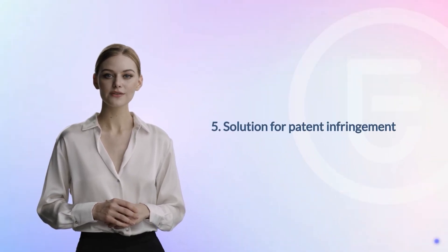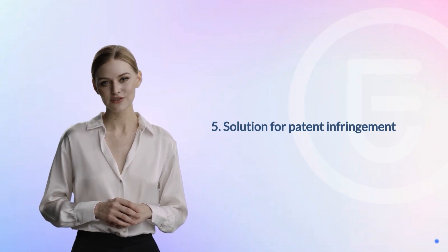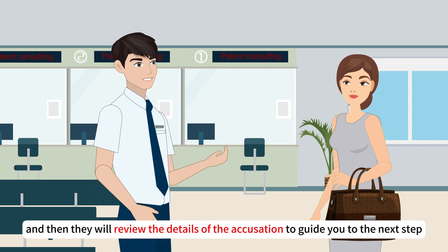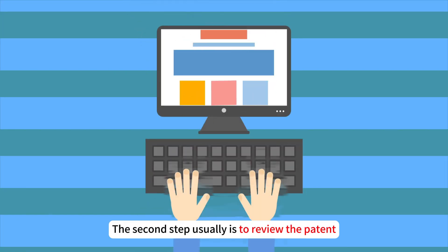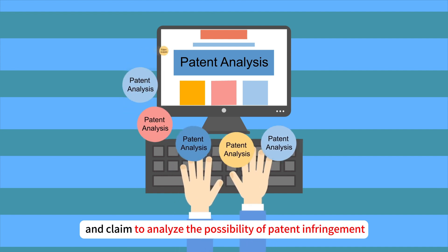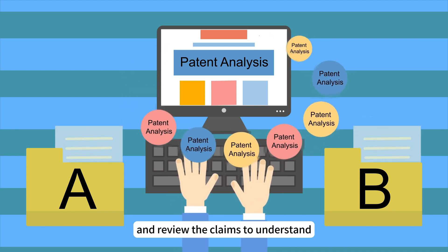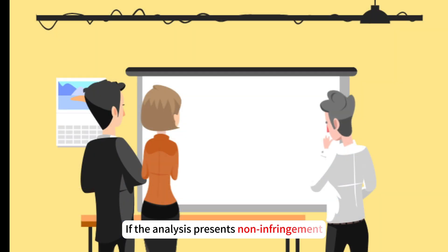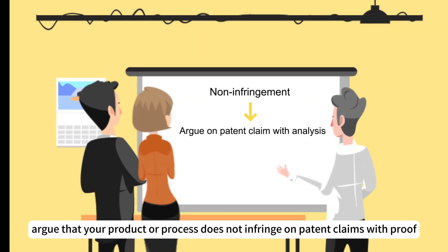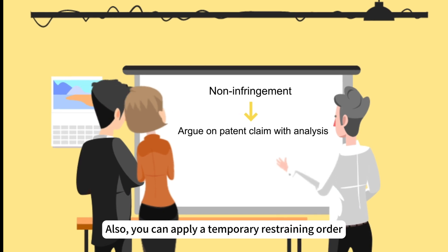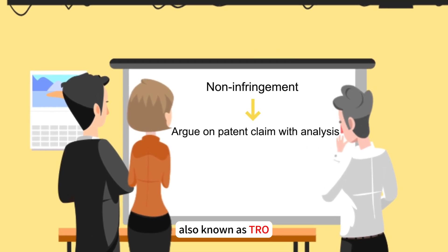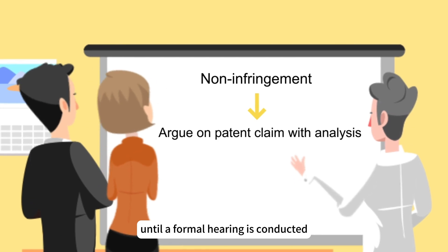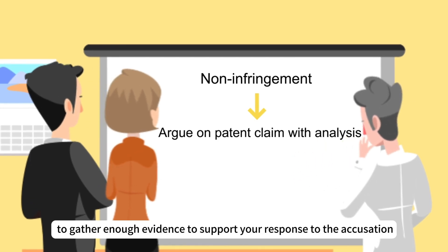There's still a chance of being accused of patent infringement even after conducting prior patent research. First, consult with a patent attorney to seek professional advice—they will review the details of the accusation and guide you to the next step. The second step is to review the patent and claims to analyze the possibility of infringement. Obtain a copy of the patent, review the claims to understand what's being patented, and compare the two inventions to identify similarities and differences. If the analysis presents non-infringement, argue that your product or process does not infringe on the patent claims with proof. You can also apply for a temporary restraining order (TRO), a short-term court order issued to prohibit action until a formal hearing is conducted, giving you time to gather evidence.